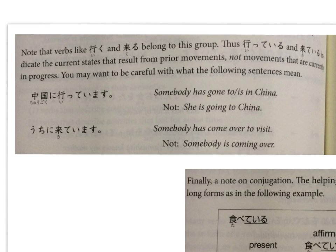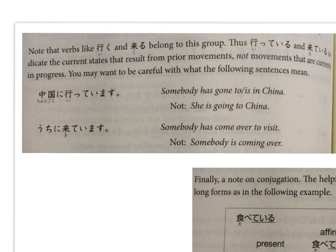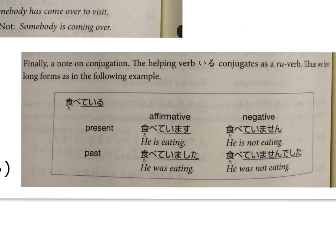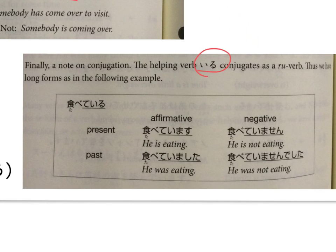IKU and KURU can also be used as TE-IRU verbs. Notice that they indicate current states that result from prior movements, not current movements. So for example, HASHIRIMASU, or 'run,' in TE-IRU form would be HASHITTE IMASU, meaning you're in the state of running. But with IKU, ITTE IMASU — that's not 'going,' that is 'she is in the state of having gone there.' And the same with KIMASU. Lastly, with conjugation, IRU conjugates like a RU-verb: TABETE IMASU, TABETE IMASEN, TABETE IMASHITA, TABETE IMASEN DESHITA.